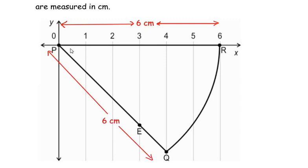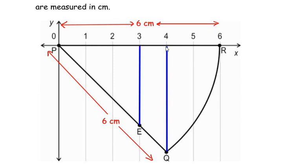We have to find out the length of PE. We are going to drop down a vertical line from 3 till it reaches point E. Similarly, let us drop down a straight vertical line from 4 till point Q, and let me label these two points as A and B.